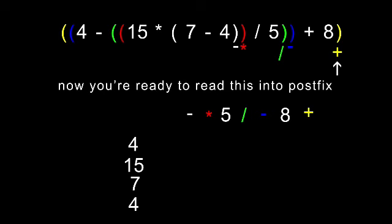Then you come down and you pull the minus sign. And what's going to happen here is 7, 4 take away. So 7, 4 take away is 3. OK. So now on your stack, you just have three things: 4, 15 and 3.